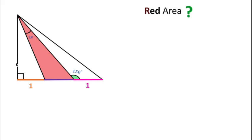Welcome to Definite Point. In this question, this is a right angle triangle. The orange line segment length is one unit, the pink line segment length is one unit, this angle is 150 degrees, and this angle is 30 degrees. We have to find the area of this red triangle. You can try to solve it, or watch the solution.